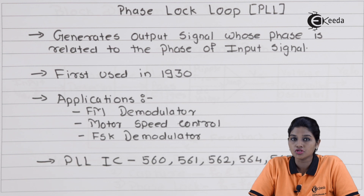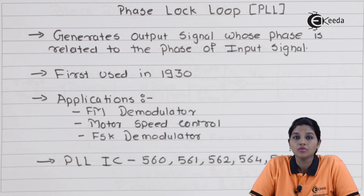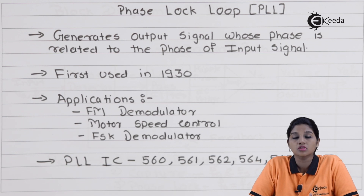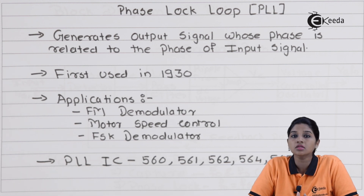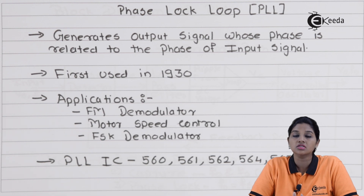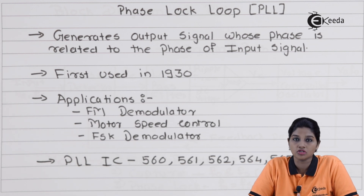PLL was first introduced in 1930, but at that time the cost was an important factor. Because the cost was very much higher, the use of PLL at that time was restricted. But as development in integrated circuits took place, the cost factor was reduced and PLL now has a number of advantages, so it can be used in a number of applications.